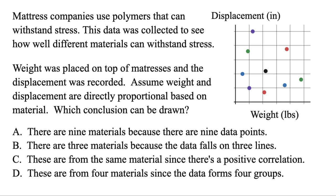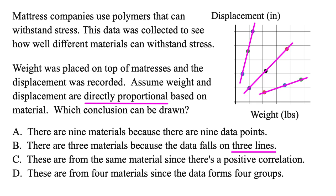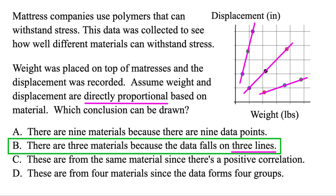Here we're given a scatter plot, but they tell us that these things are directly proportional — weight and displacement. If they're directly proportional, that means the data points are going to lie in a straight line. So how many lines can we draw through here? Well, there's one, two, three. So really we're just looking for them to mention three lines in the answers. And B has that — these must be from three materials because the data falls along three lines. In other words, this is one mattress with weight placed on it, a second one, and a third one.